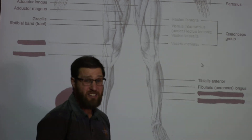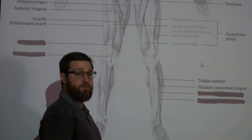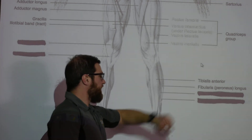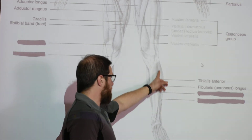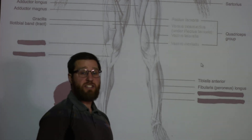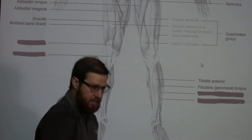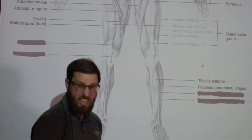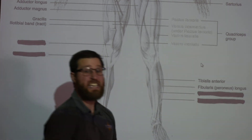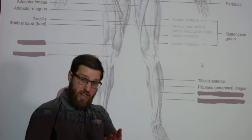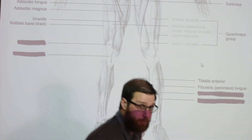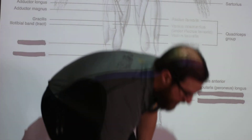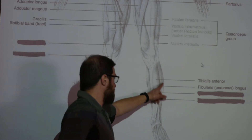If you have shin splints, it's the tibialis anterior that is breaking down. Your fibularis longus — also called peroneus longus — is on the lateral side of your lower leg and is involved in eversion, a somewhat unique movement where you turn the bottom of your foot outward. If you've had an ankle sprain, you usually invert your foot, but eversion is the opposite — pointing the bottom of your foot away from the midline. That is your fibularis longus doing that motion.